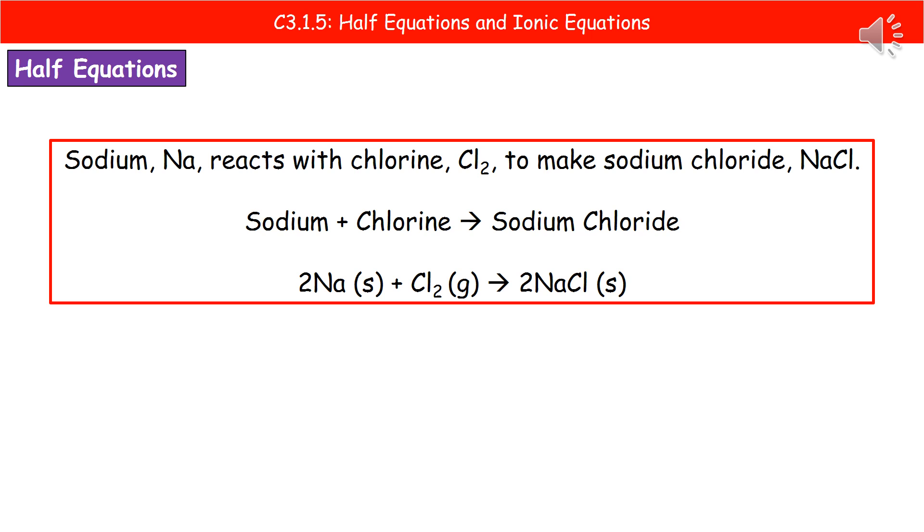They could ask you to write the balanced symbol equation for the reaction, including state symbols. So that would be 2Na with the S representing the solid plus Cl2 because chlorine is a gas. And then it makes 2NaCl, which is a solid again. So that could be the initial point of our question.